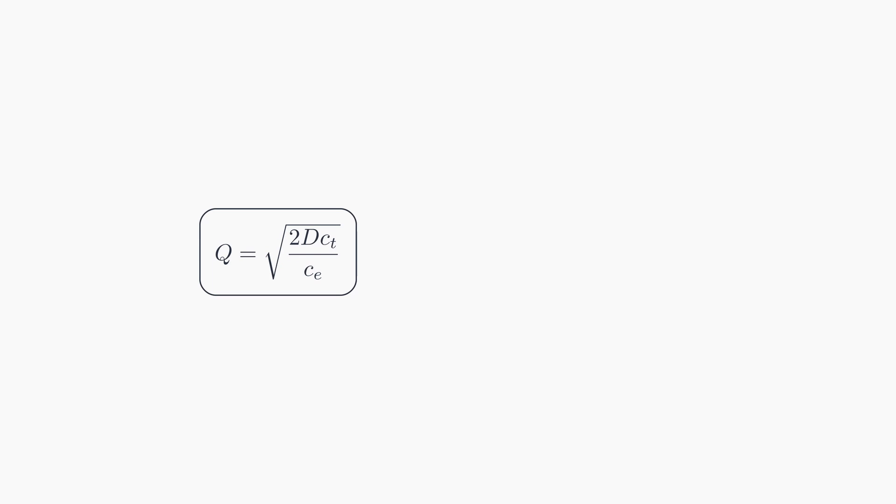The Optimal Order Quantity formula is already part of our toolkit. Now, we'll apply this formula to determine the total relevant cost, leading us to an expression for the least possible cost. To differentiate it from a variable or indeterminate q, we'll denote the optimal quantity with a star superscript, so it will be referred to as q star.